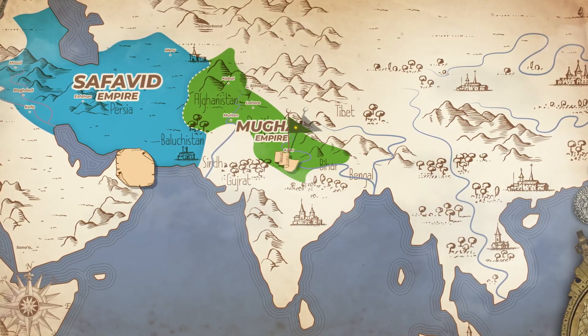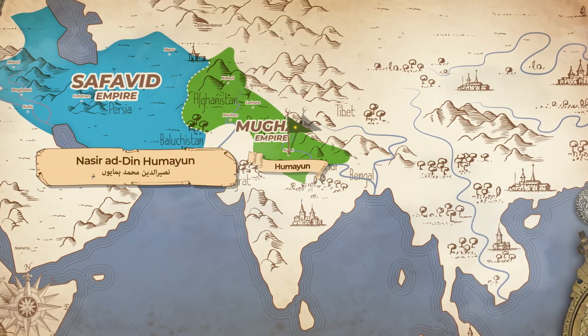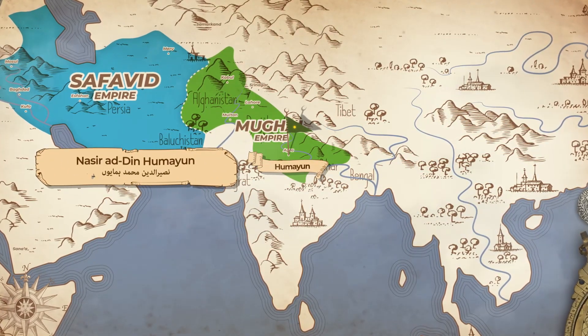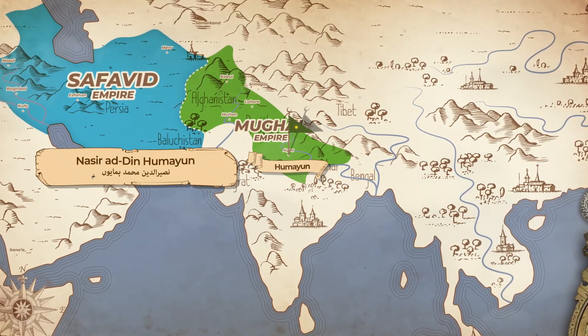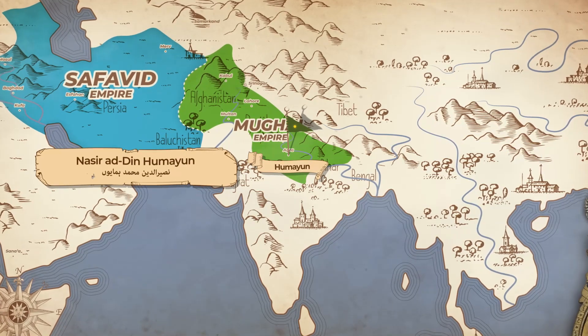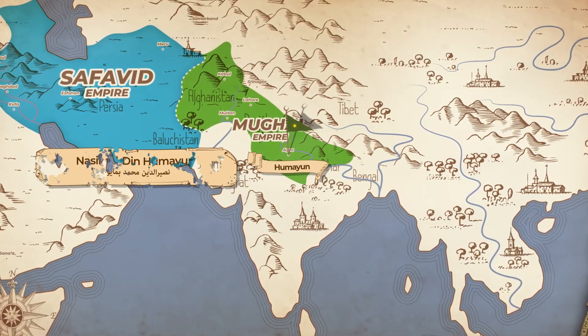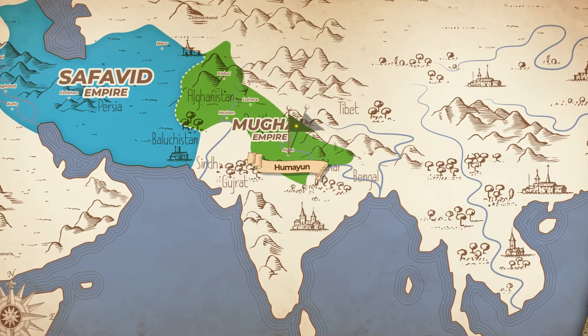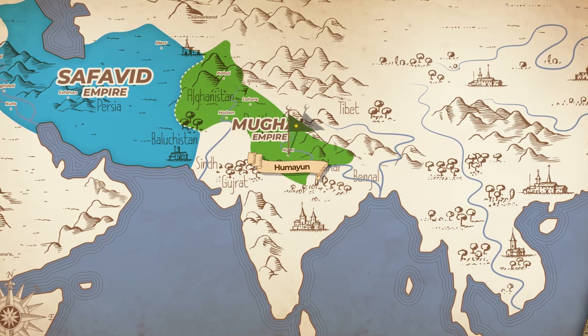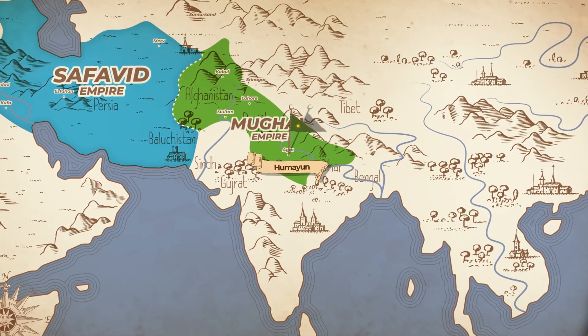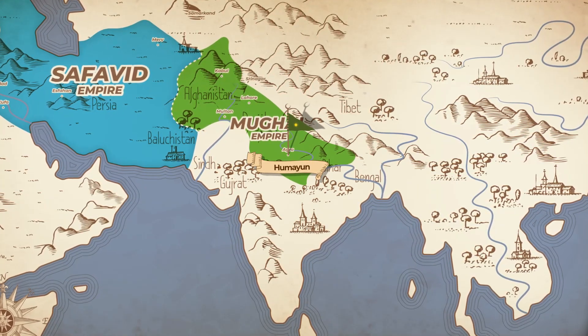His eldest son, Nasiruddin Muhammad Humayun, ascended to the throne. With the Afghans eyeing his throne from the east and his own brothers from the west, Humayun almost became the second and last emperor of the Mughal Empire.